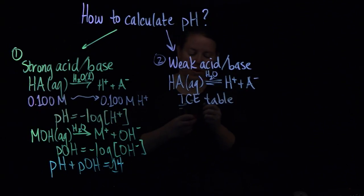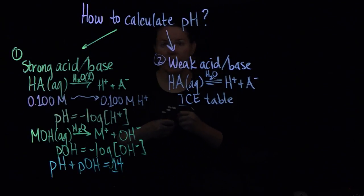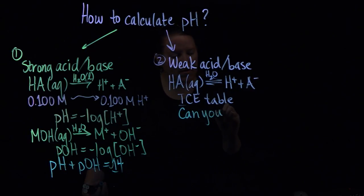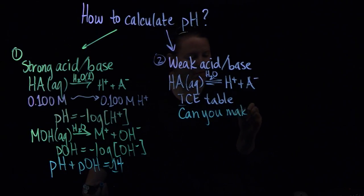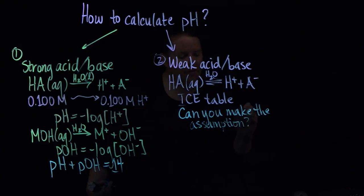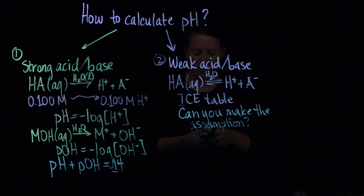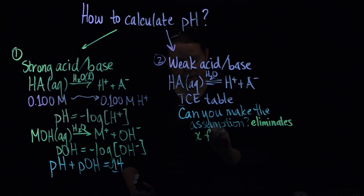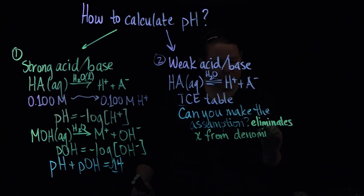You have to determine whether you can make the assumption. The assumption is, of course, to eliminate x from the denominator. And on previous videos, we've talked about how to determine whether you can make the assumption or not. So remember that this eliminates x from the denominator.